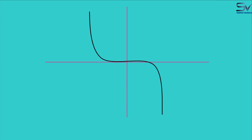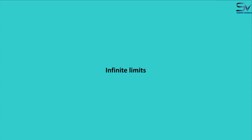Here I have drawn a curve on the graph. You can see the yellow colored vertical lines are the vertical asymptotes of the curve. Vertical asymptotes are related to infinite limits. So now we have to understand infinite limits.